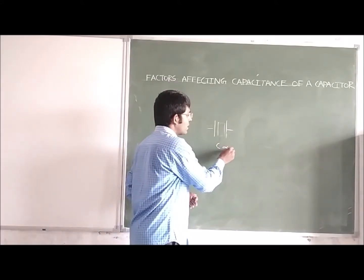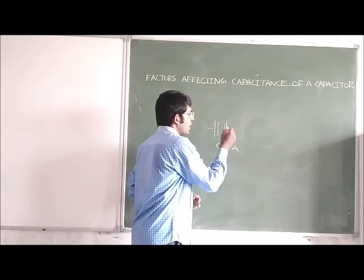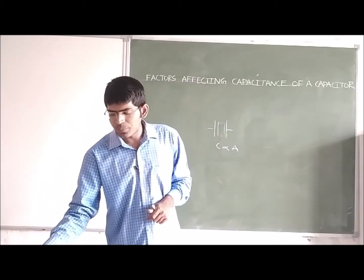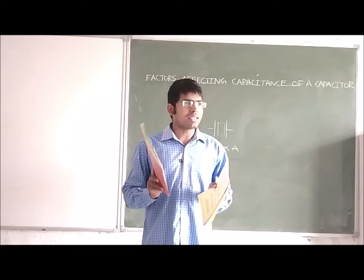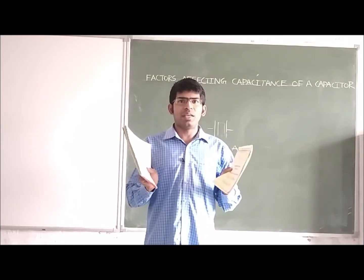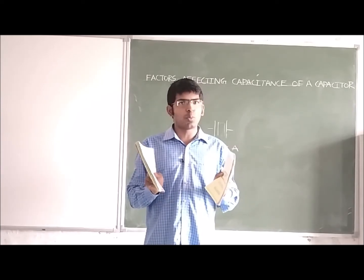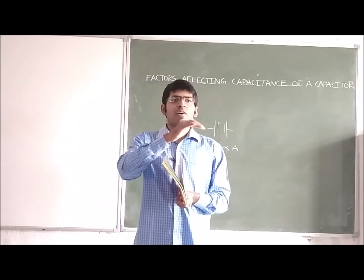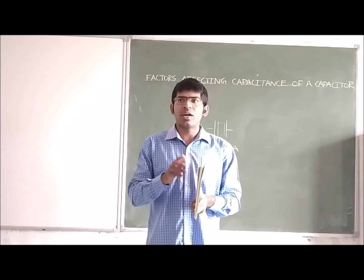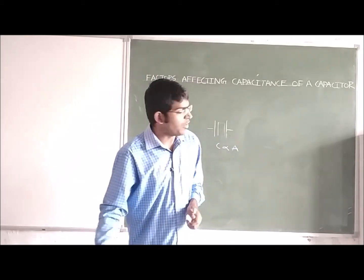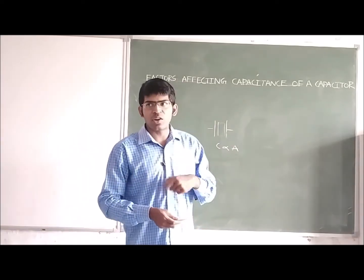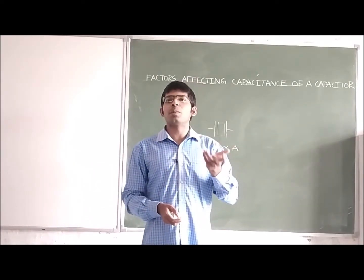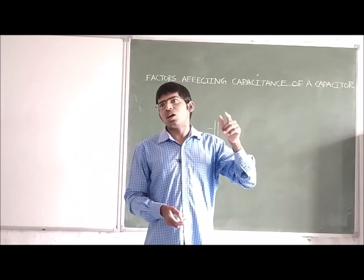The capacitance of a capacitor is directly proportional to the area of the plates. We have taken two parallel plates — the area is L into B for one plate. We consider only the area of a single plate, since both plates have the same area. When we increase the length or width of a plate, the area increases and the capacitance value also increases.